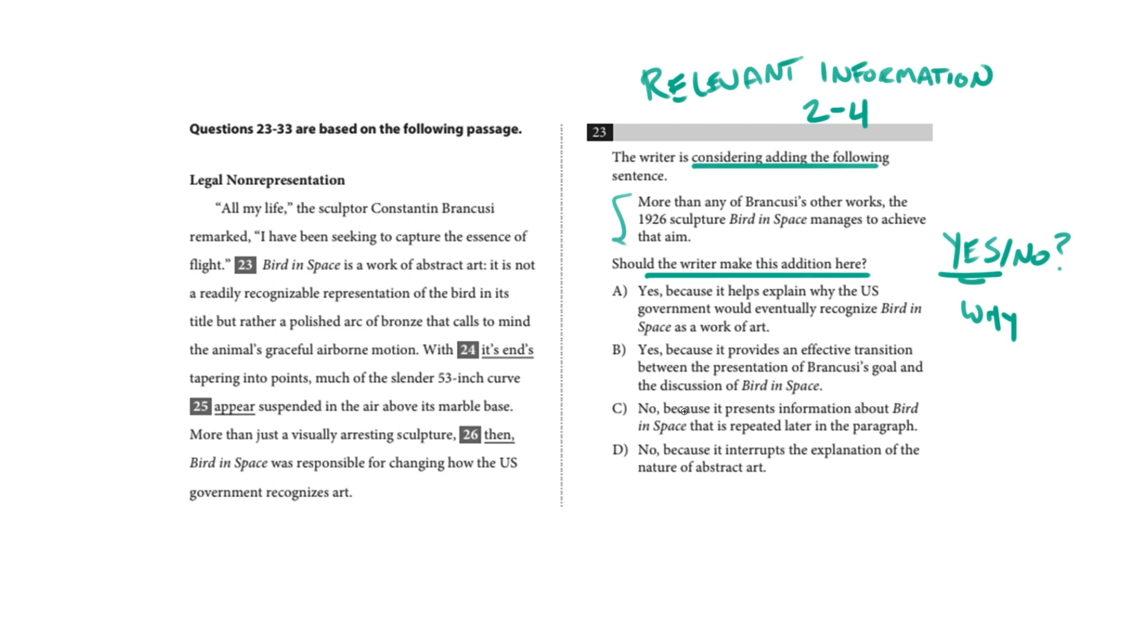Now, because you can be correct that the author should or should not make an addition, but if you haven't identified the correct reason, then you won't get the question correct. So let's take a look at the immediate context for the question.